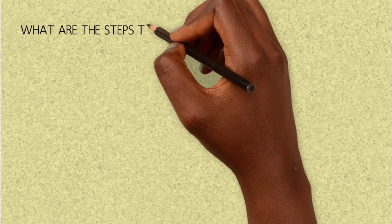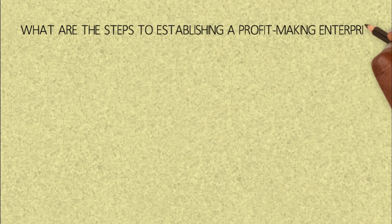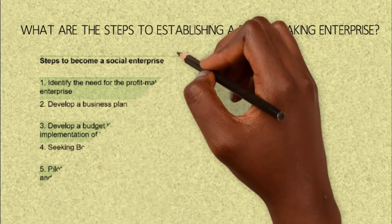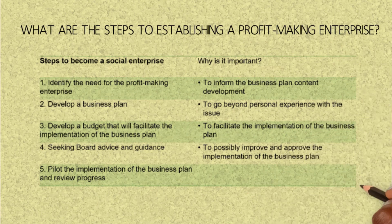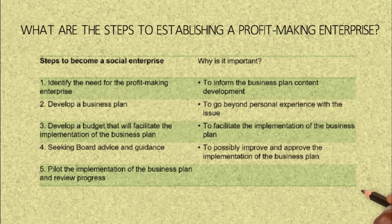The key steps to take when putting in place this model are: first, identify the need for the profit-making enterprise. In that case, you need to carry out a market survey to scope the market and see what need, if you intervene, can enable you to make significant returns on investment. Secondly, you need to develop a business plan. Thirdly, you need to develop a budget that will facilitate the implementation of the business plan.